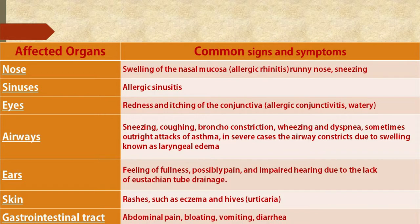Common signs and symptoms by affected organ: Nose — swelling of the nasal mucosa, allergic rhinitis, runny nose, sneezing. Sinuses — allergic sinusitis. Eyes — redness and itching of the conjunctiva, allergic conjunctivitis, watery eyes. Airways — sneezing, coughing, bronchoconstriction, wheezing and dyspnea, sometimes outright attacks of asthma; in severe cases the airway constricts due to swelling known as laryngeal edema. Ears — feeling of fullness, possibly pain, and impaired hearing due to lack of eustachian tube drainage. Skin — rashes such as eczema and hives, urticaria. Gastrointestinal tract — abdominal pain, bloating, vomiting, diarrhea.